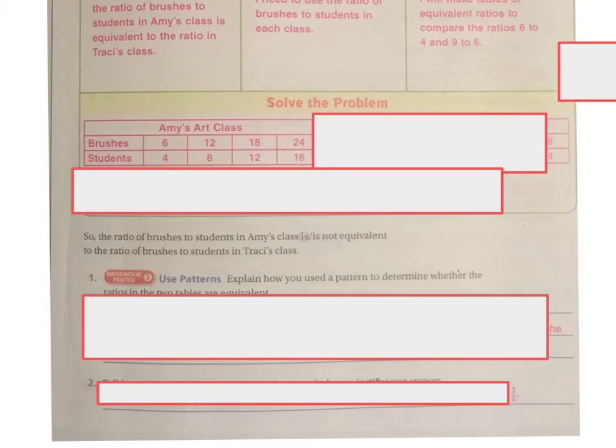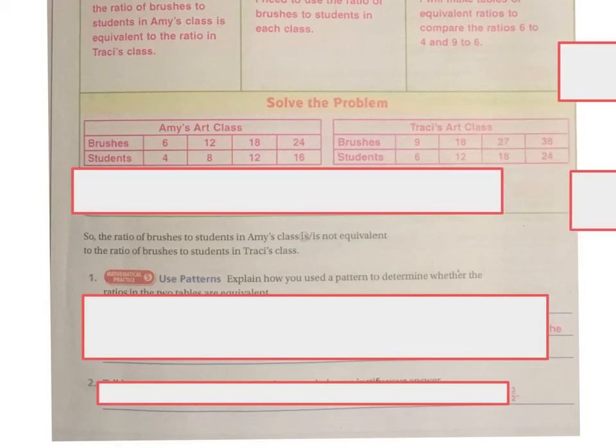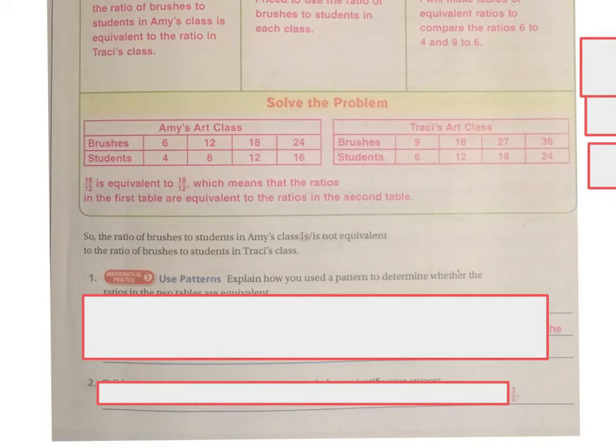So now let's do the other art class. It's nine to six. So if I multiply nine times two, I get eighteen. Six times two, I get twelve. This side's going to be times three, I get twenty-seven. Six times three, I get eighteen. Nine times four is thirty-six, and six times four is twenty-four. So eighteen twelves is equivalent to eighteen twelves, which means that the ratio in the first table are equivalent to the ratio in the second table, because here's my eighteen twelves, and I have eighteen twelves.